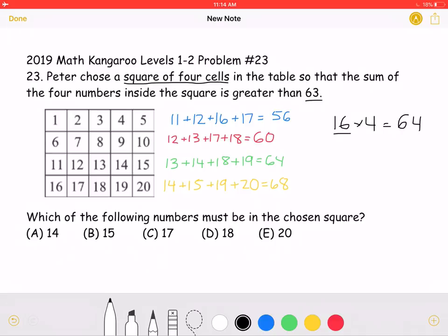Therefore, we know that the square can't be from these two rows, or these two rows, but must come from the bottom two rows in order to have a sum greater than 63.